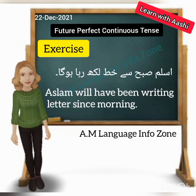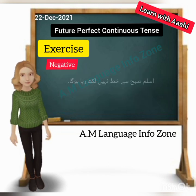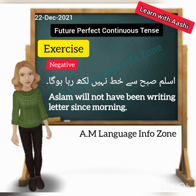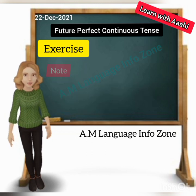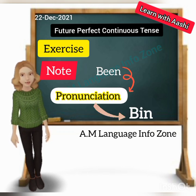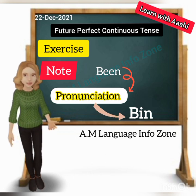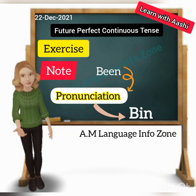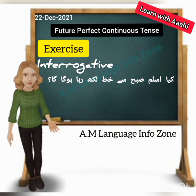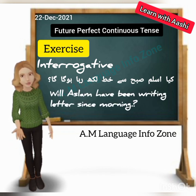Second sentence: 'Aslam subha se khat likh raha hoga' — 'Aslam will have been writing letters since morning.' Negative: 'Aslam will not have been writing letters since morning.' Note here that the word 'been' — many students mispronounce it as 'bain,' but the correct pronunciation is 'bin' (short vowel sound). It is spelled with double-e but pronounced with a short sound. Interrogative: 'Will Aslam have been writing letters since morning?'